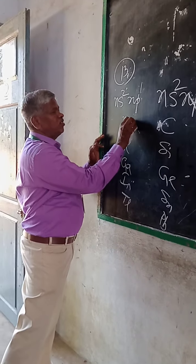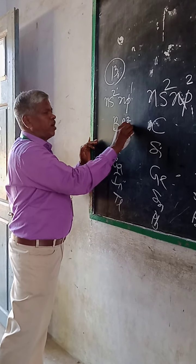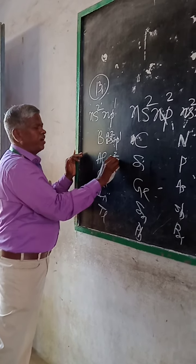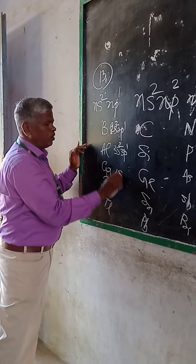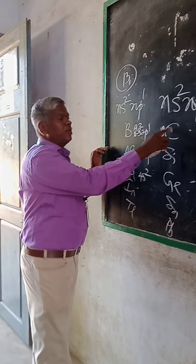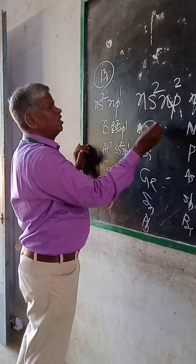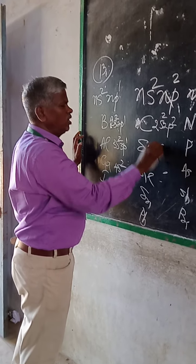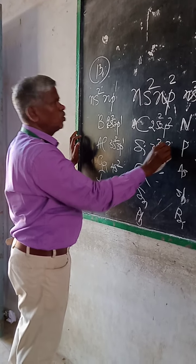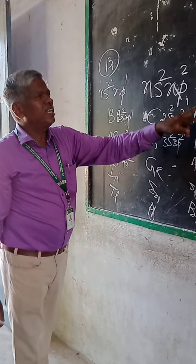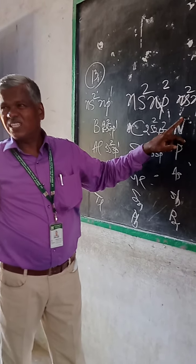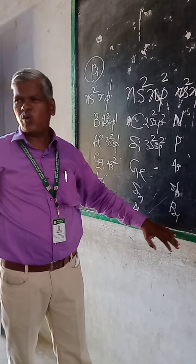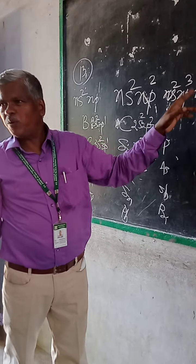For example, in group 13: 2s2, 2p1 for the second period; 3s2, 3p1 for the third period; and 4s2, 4p1 for the fourth period. Group 14 has 3s2, 3p2, and group 15 has 2s2, 2p3 or 3s2, 3p3.